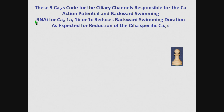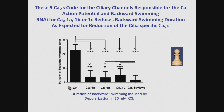He showed that by RNAi for these three channels. RNAi reduces the backward swimming duration for a cell that's depolarized, as you would expect for these particular channels. Here you have the duration of backward swimming. This is RNAi by feeding: feeding the cells with an empty vector bacteria versus feeding them with RNAi for one, two, or the third channel greatly reduces the duration of backward swimming. And if you combine them all, then you get very little backward swimming. This is depolarization in 30 millimolar potassium.